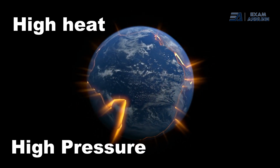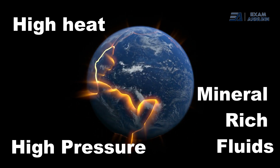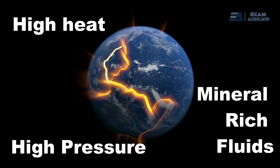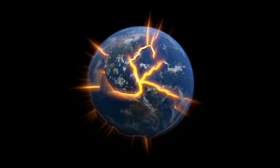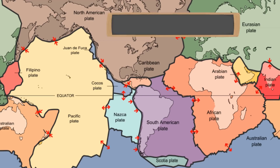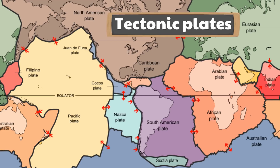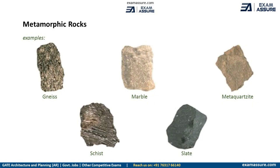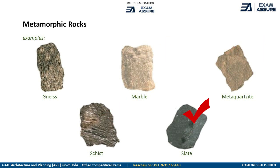high pressure, hot mineral-rich fluids or more commonly some combination of these factors. Conditions like these are found deep within the earth or where tectonic plates meet. Some examples of metamorphic rocks include gneiss, marble, metaquartzite, schist and slate.